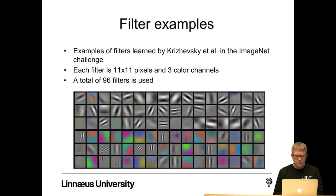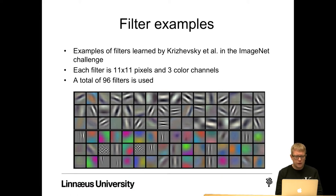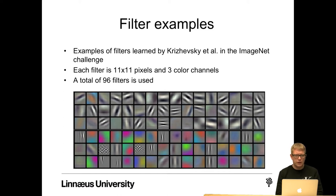It can be quite interesting to visualize the filters. Here are some examples of the filters learned by Krizhevsky and his colleagues in the ImageNet challenge. Each filter is 11x11 pixels in 3 color channels, and a total of 96 filters is used. If we visualize the filters, we see that they learned features such as edges, different colors, and color combinations.